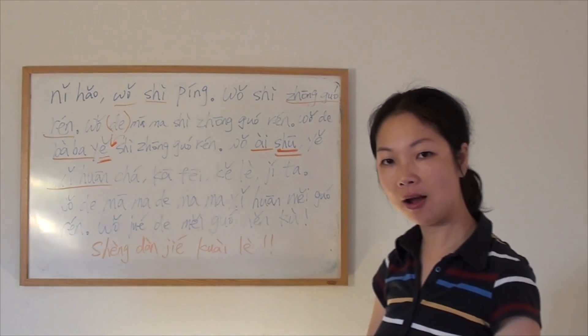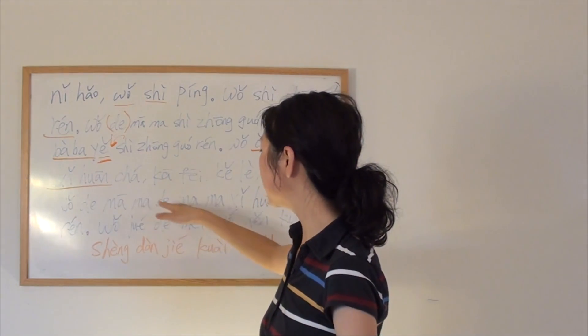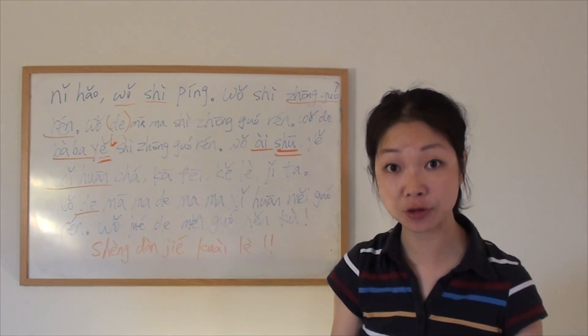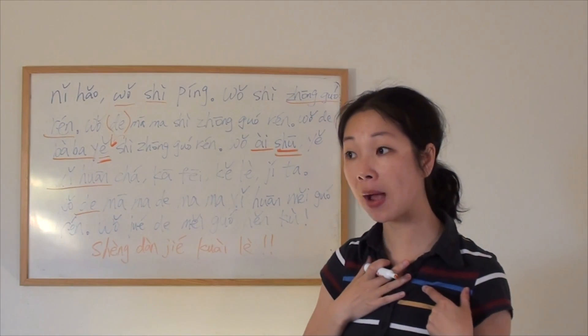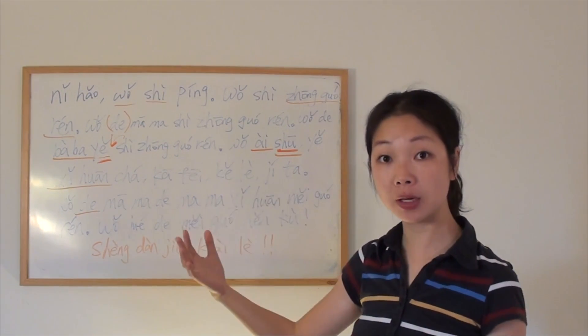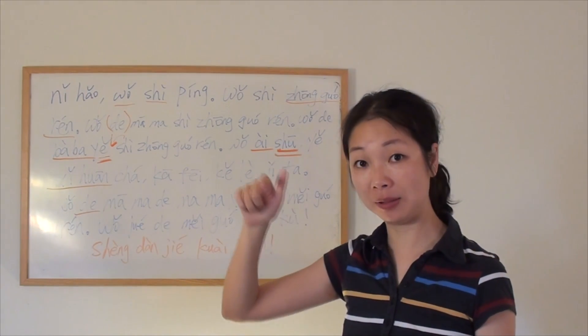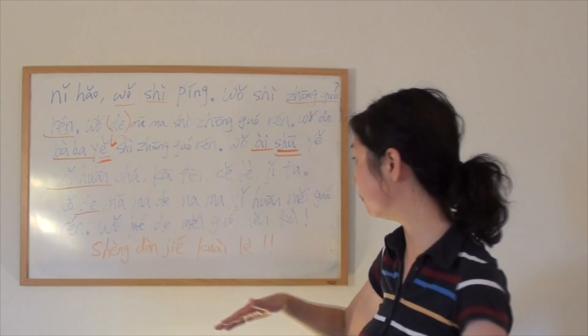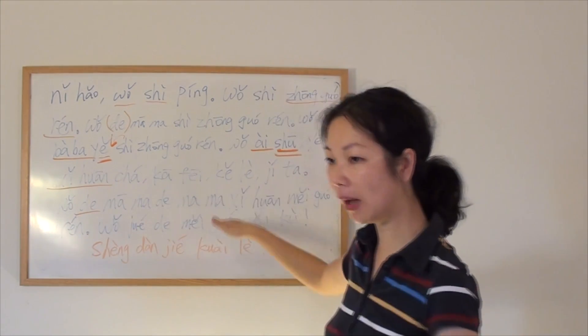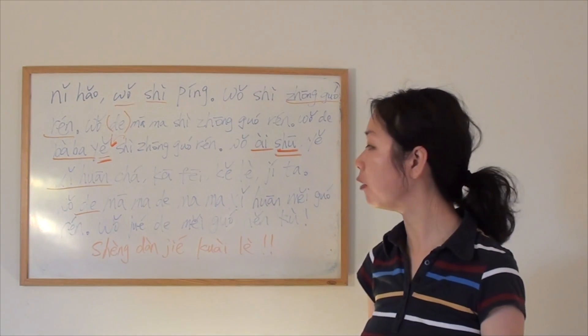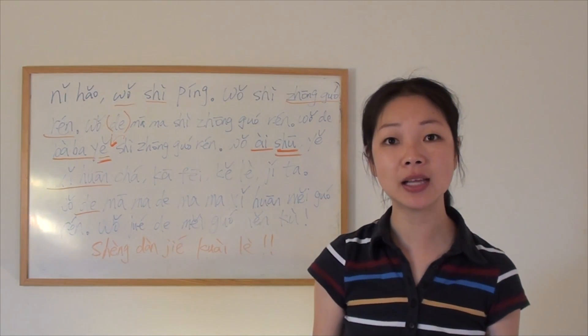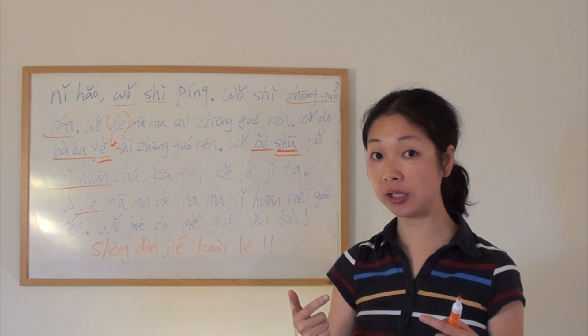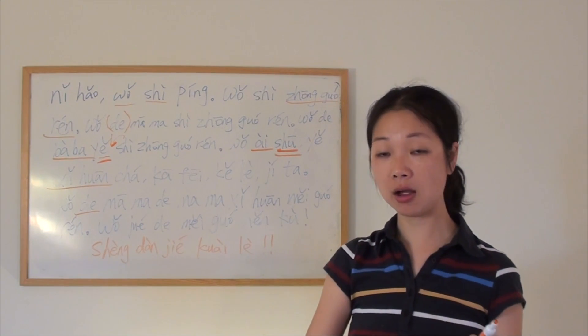我的妈妈的妈妈. Okay, the literary meaning is my mom's mom. Remember, we talked about 的, it means possession. 我的妈妈, 我的书, my book. But in my book, you cannot skip the 的, you have to say 我的书. But 我的妈妈, you can say 我妈妈. Here, 我的妈妈的妈妈. Then people tell me, oh, that means your grandma on your mom's side. Yes. In Chinese, grandma will be called differently according to your mom's side or your dad's side.